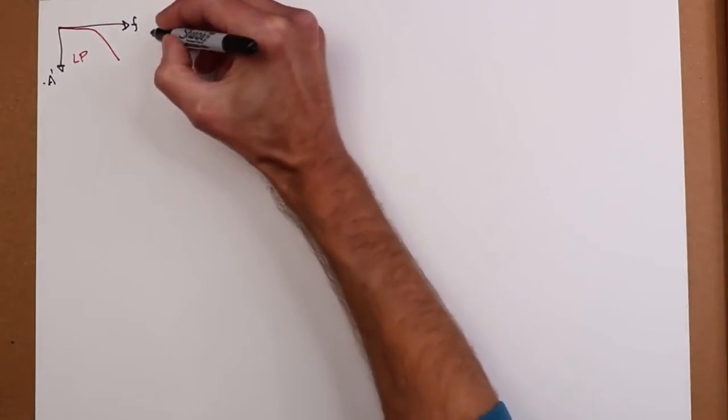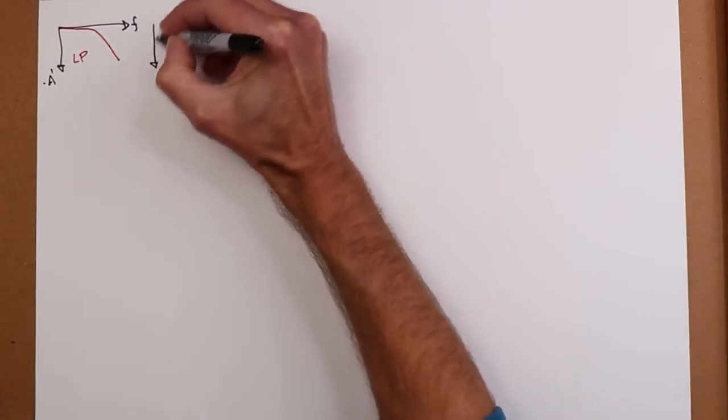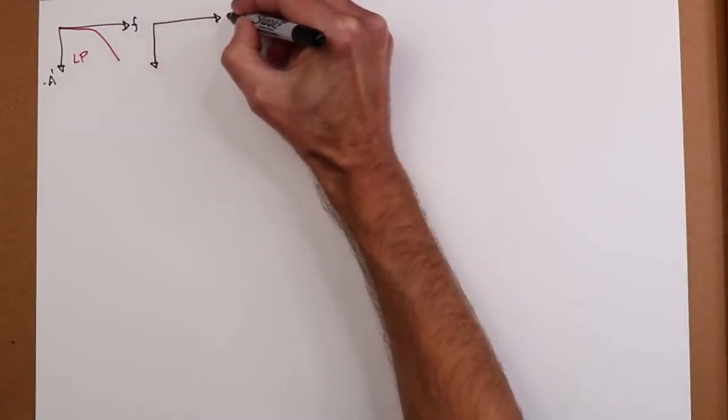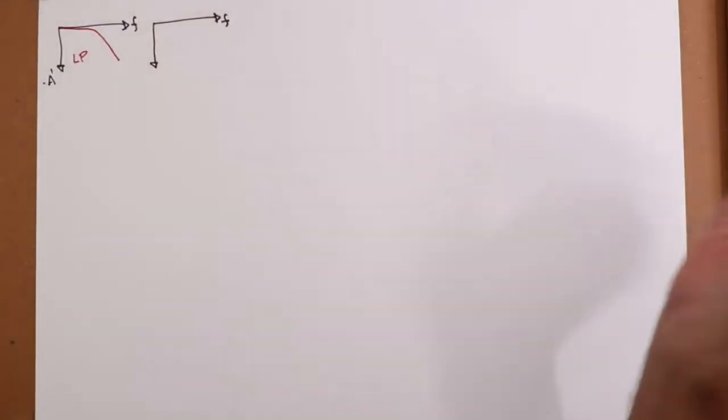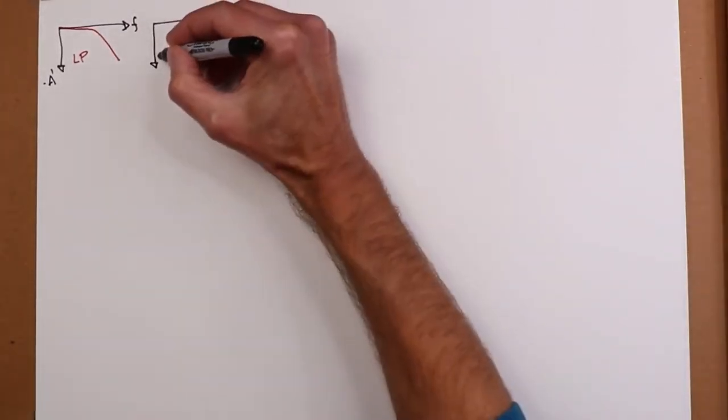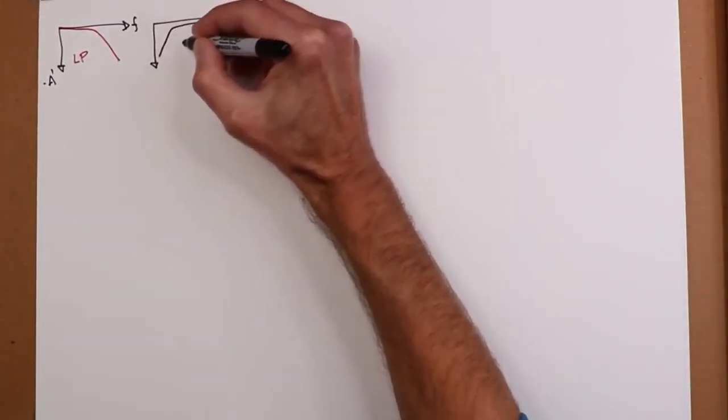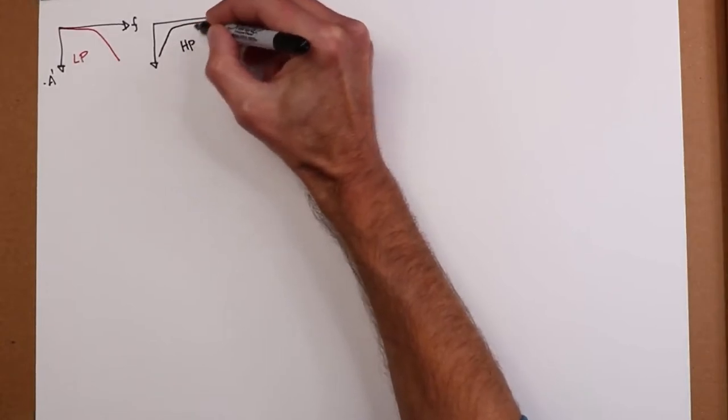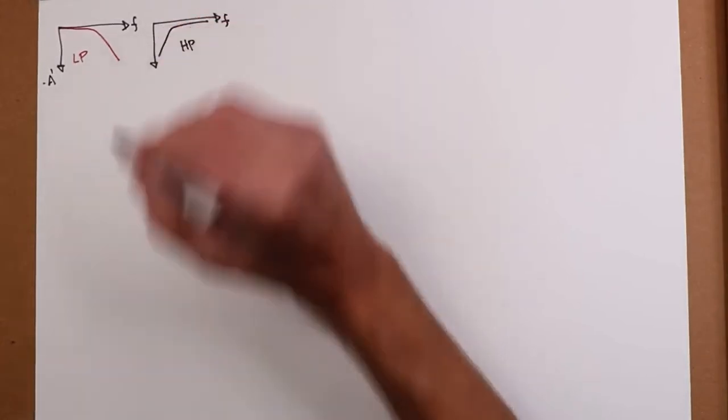Then we have sort of the logical inverse of this, which is going to look like this. So this is a high-pass. High frequencies through, low frequencies rejected.